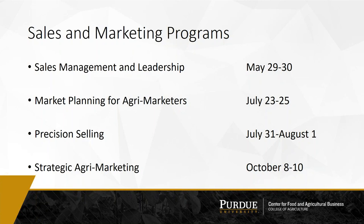We have two marketing programs. Market Planning for Agri-Marketers is happening July 23rd through the 25th — a deep dive into the four P's of marketing: product, place, price, and promotion, and how a marketing plan gets executed in the organization. This program is appropriate for folks relatively new to marketing. Strategic Agri-Marketing, October 8th through the 10th, is a higher-level focus — taking those four P's further and thinking about how we segment customers and use that for decision making. Both programs feature Scott Downey, and Dave Downey — who started our center 30 years ago — is also part of some of those programs.